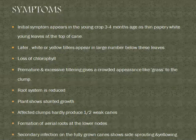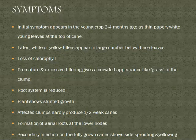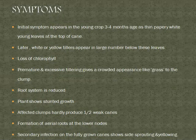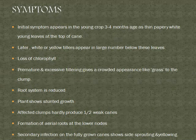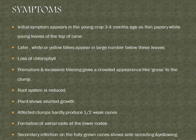Initial symptoms appear in the end crop at three to four months of age as thin, papery white young leaves at the top of the cane. Later, white or yellow tillers appear in large numbers below these leaves, and afterwards loss of chlorophyll is found at the top of the leaves. Premature and excessive tillering gives a crowded, grass-like appearance to the clump.